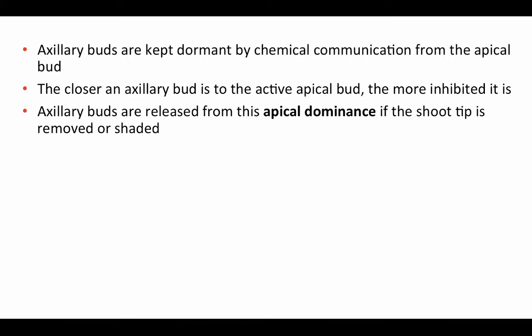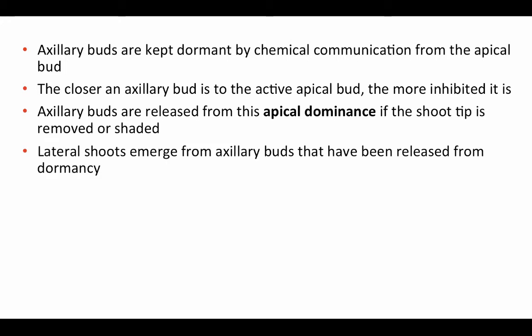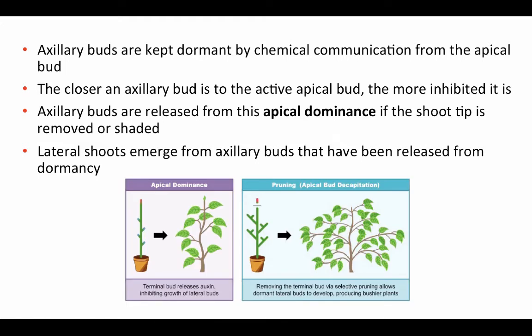Axillary buds are released from apical dominance if the shoot tip is removed or shaded. If growth at the apical bud stops, axillary buds start growing to maintain plant growth, and lateral shoots emerge from those released axillary buds. This is the basis of pruning or pinching off apical buds — called apical bud decapitation — to get a branchier, more full-looking plant. Removing the apical bud allows the lateral meristems to start dividing and producing attractive lateral branches.